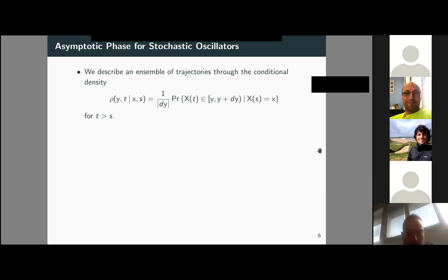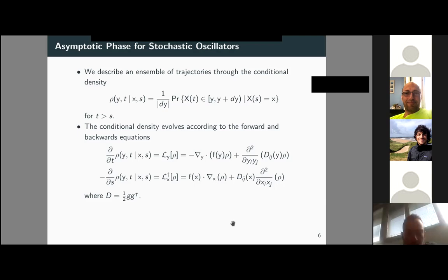Instead of considering individual trajectories, we describe an ensemble through the conditional density — the probability of being at y at time t, given you were at x at time s. This conditional density evolves according to the forward and backward equations. L and L† correspond to the Kolmogorov forward and backward operators: the forward operator involves differentiation with respect to forward time, and the backward operator with respect to backward time.